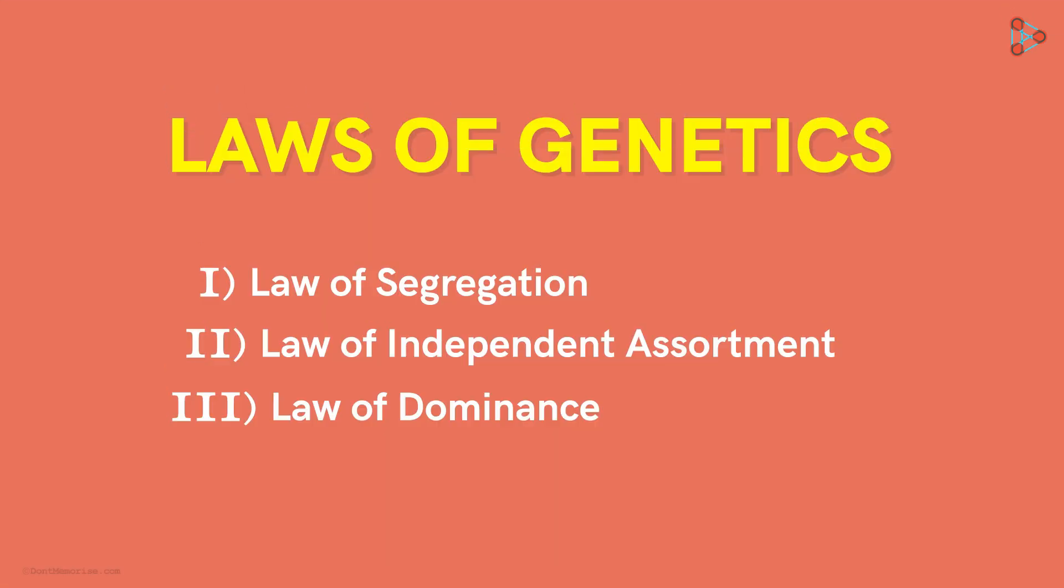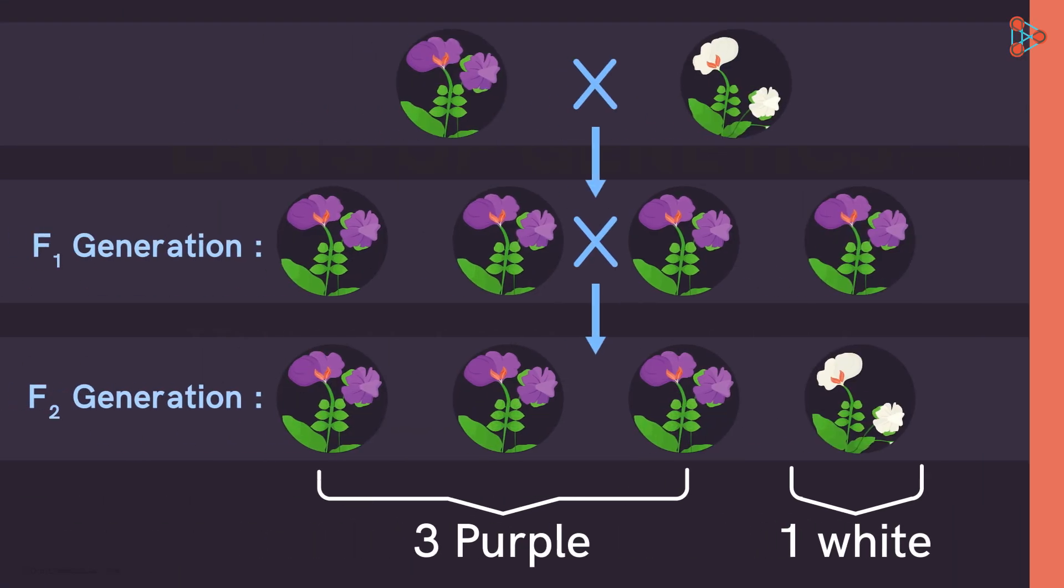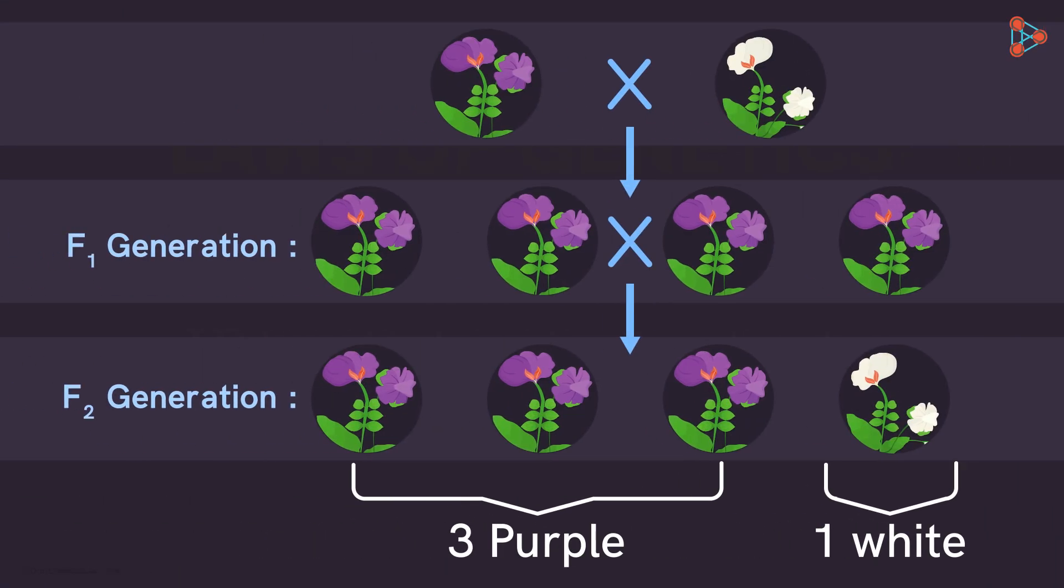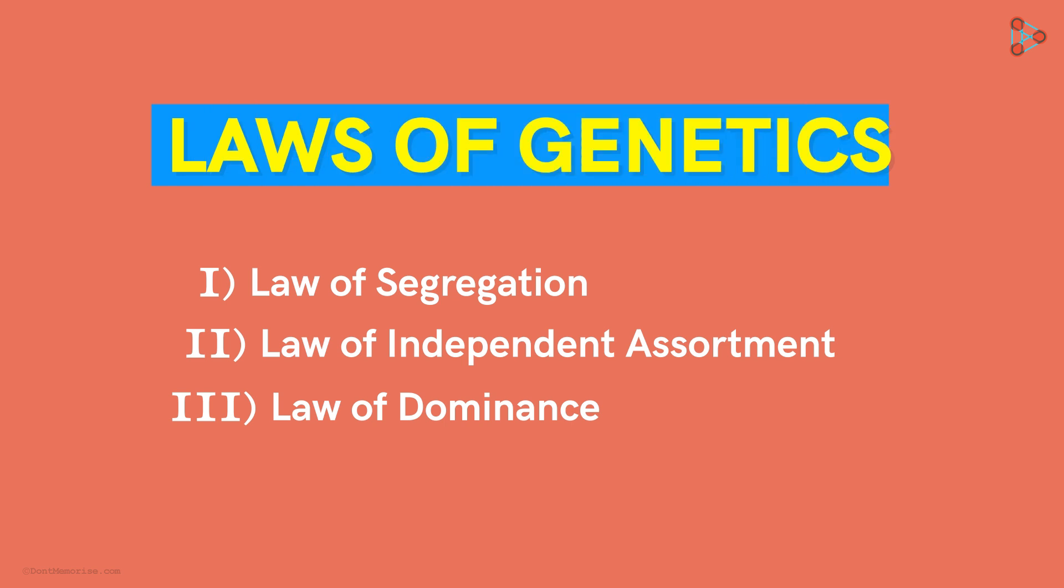But do all the organisms always follow these fundamental laws? When crossed, do all organisms always give offsprings in the ratios that Mendel obtained? Not really! Even this has exceptions!